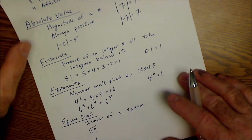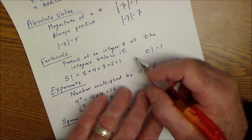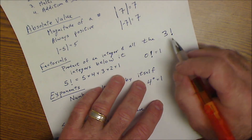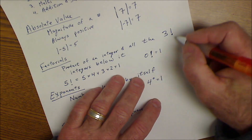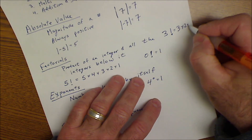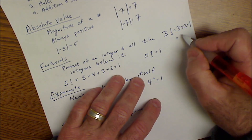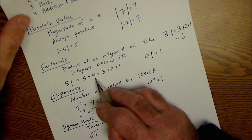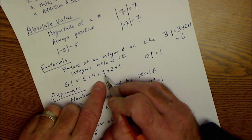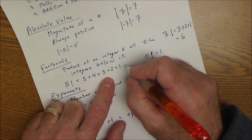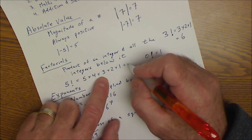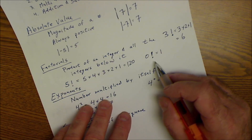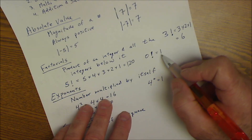Factorials: a factorial is the product of an integer and all the integers below it, represented with an exclamation point. So three factorial — that doesn't mean three with emphasis, it means three times two times one, which equals six. Five factorial would be five times four times three times two times one, which equals 120. Another thing to remember is that zero factorial is equal to one.